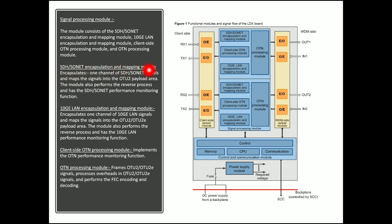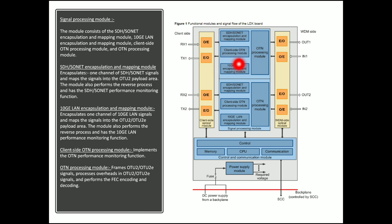The SDH/SONET encapsulation and mapping module encapsulates one channel of SDH/SONET signals and maps them into the OTU2 payload area, and also performs the reverse process with SDH/SONET performance monitoring. The 10G LAN encapsulation and mapping module encapsulates one channel of 10G LAN signals and maps them into the OTU2 payload area, also performing the reverse process. The client side OTN processing module and OTN processing module implement OTN performance monitoring, frame the OTU2 signal, process overhead, and perform FEC coding and decoding.